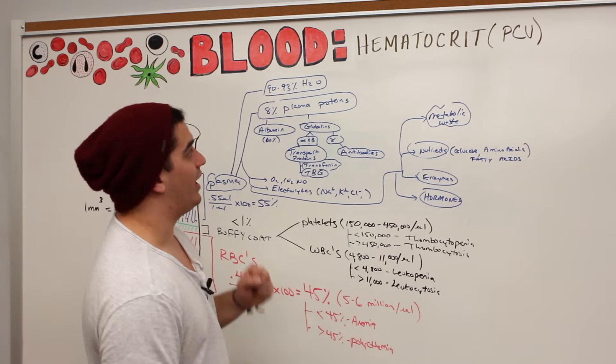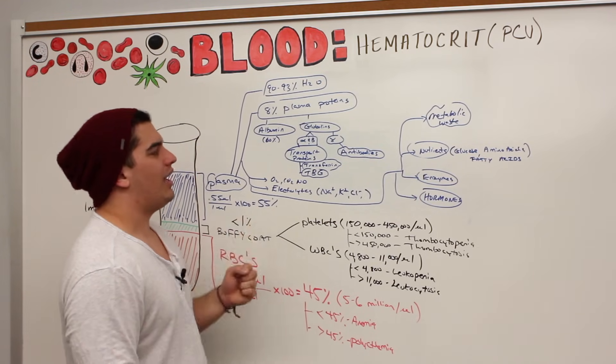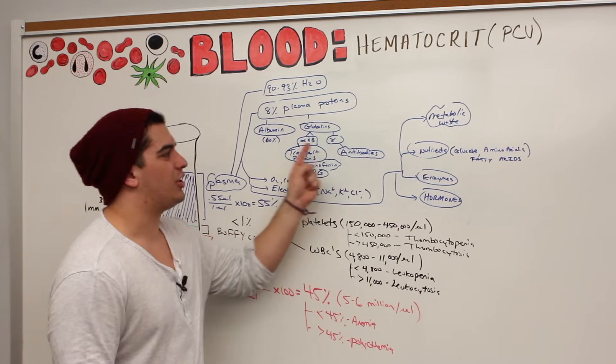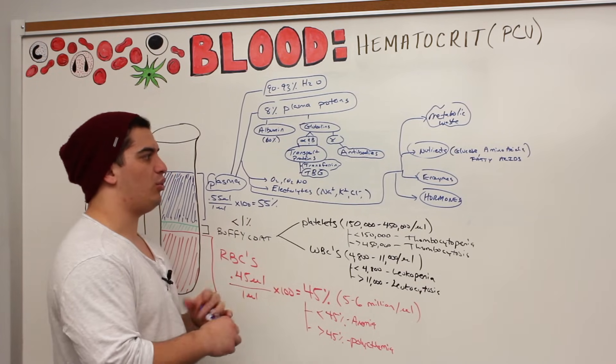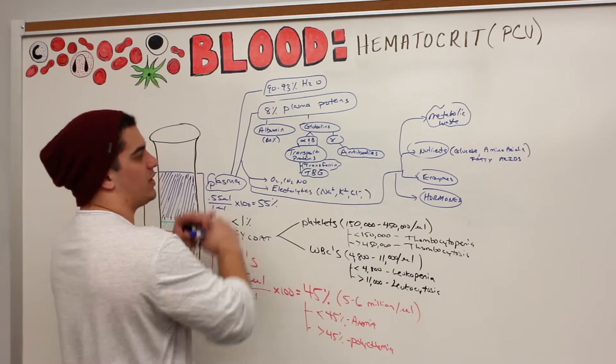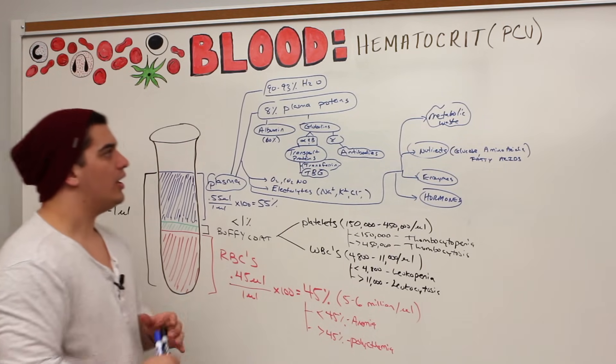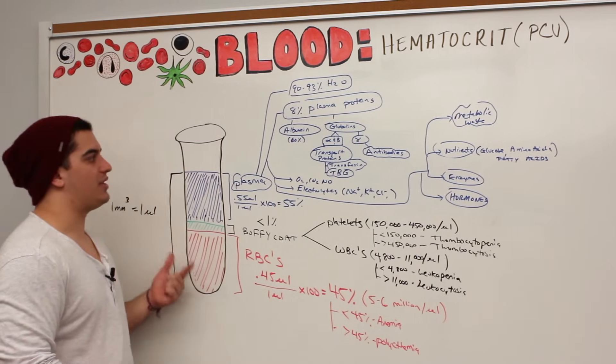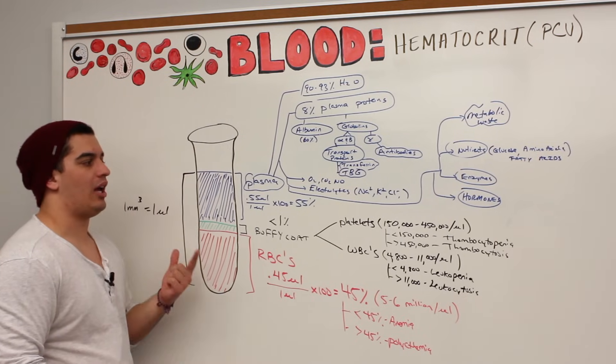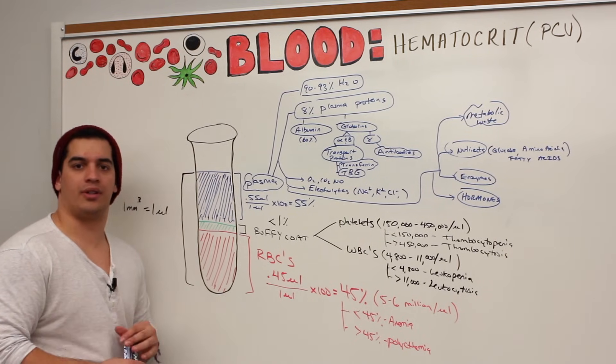Alright, so pretty much in a nutshell, that gives us what we need to know about this. Now, we're not going to go into certain types of imbalances within the plasma because it'll just get too insane. For right now, just know that these are the constituents of the plasma. So pretty much, guys, in a nutshell, this gives us everything we're going to need to know about the hematocrit or the packed cell volume. See you, Ninja Nerds.